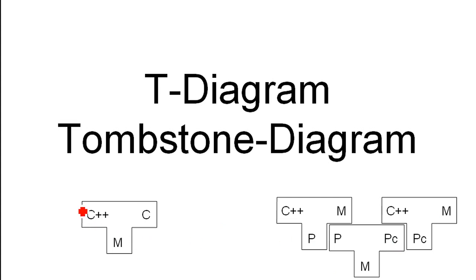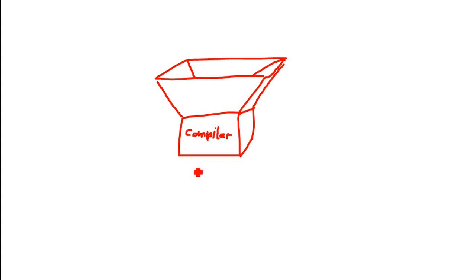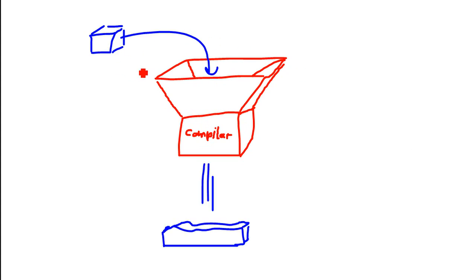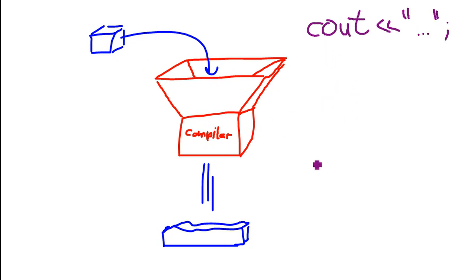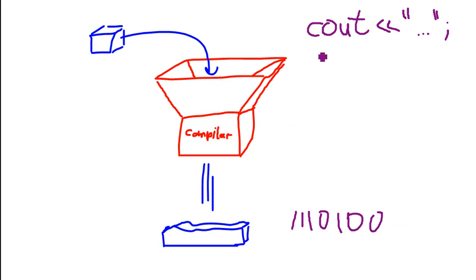Let's first start off and forget about the T — let's just think of a usual compiler. Let's imagine the compiler as some kind of machine or filter that you put something in, it does something with it, and puts something out. For example, you're putting in C++ code and the compiler does something with it — it knows that 'cout' relates to some binary sequence like 1 1 1 0 1 0 0. So the compiler itself has a logic that knows how to translate this to that.